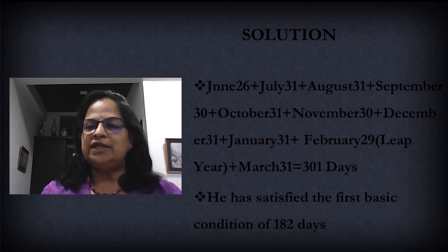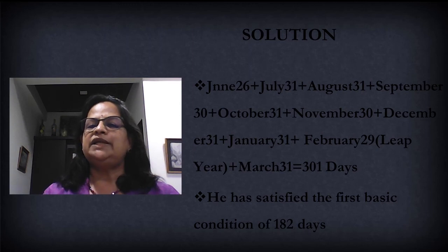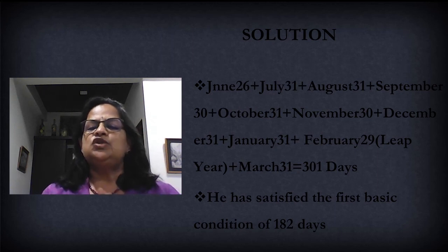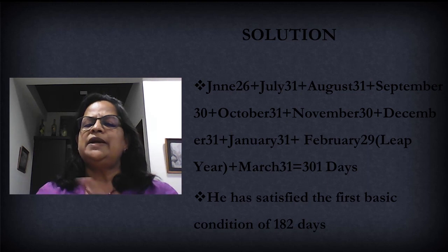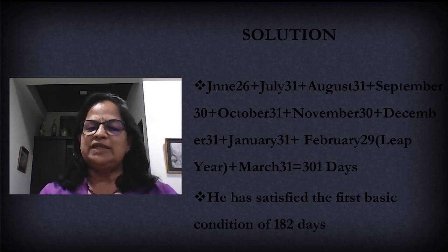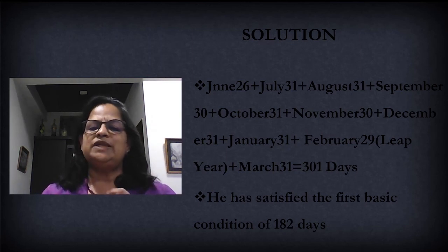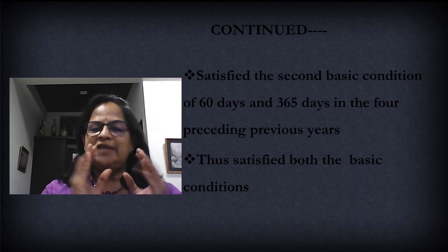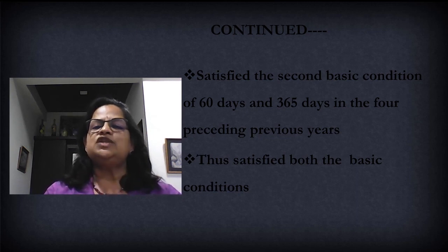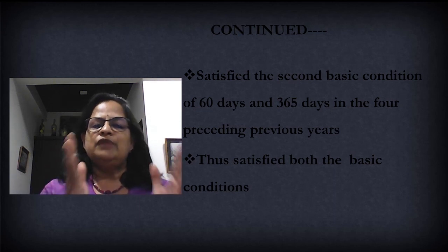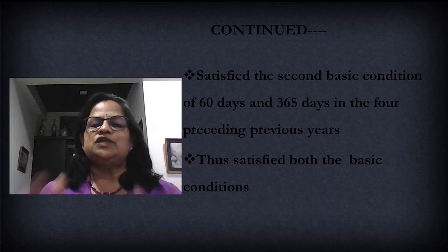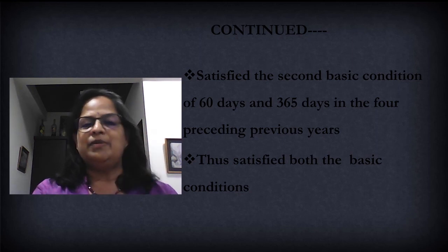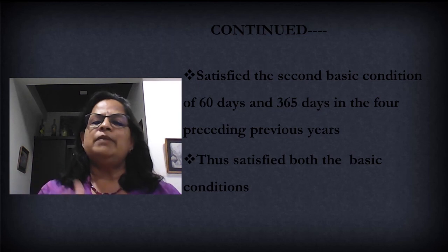July is 31 days, August 31, September 30, October 31, November 30, December 31, January 31, February 29 (leap year), and March 31. So he was in the previous year for 301 days. He has satisfied the first basic condition of 182 days. For the second basic condition — 60 days in the relevant previous year: he was there for 301 days, so that is satisfied. No need to calculate again.